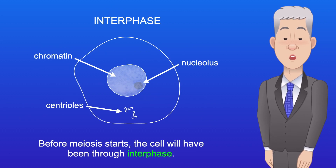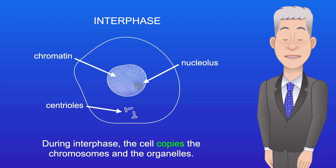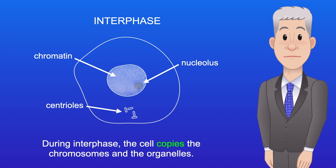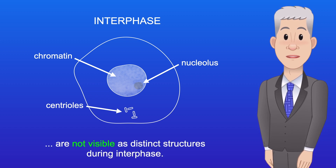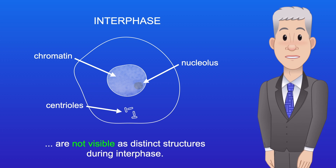Before meiosis starts, the cell will have been through interphase. During interphase, the cell copies the chromosomes and the organelles. Remember, though, that the chromosomes are not visible as distinct structures during interphase.